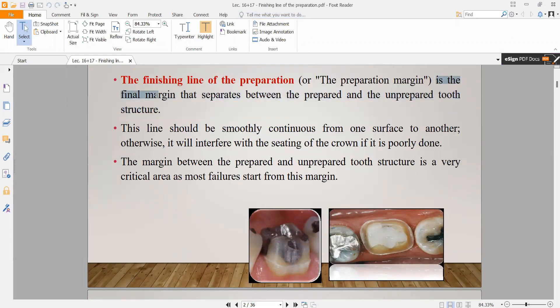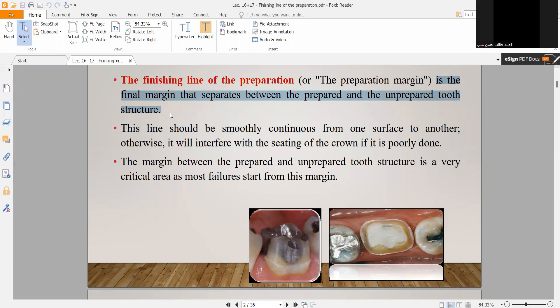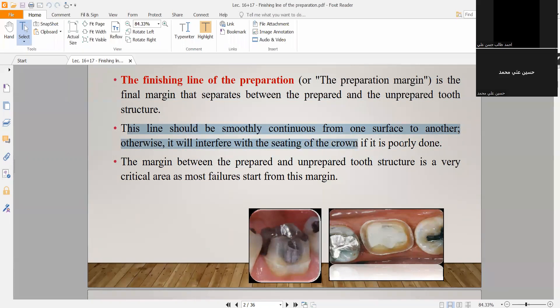The finishing line is the final margin that separates between the prepared and unprepared tooth structure. This line should be smoothly continuous from one surface to another. Otherwise, it will interfere with the seating of the crown if it's poorly done.